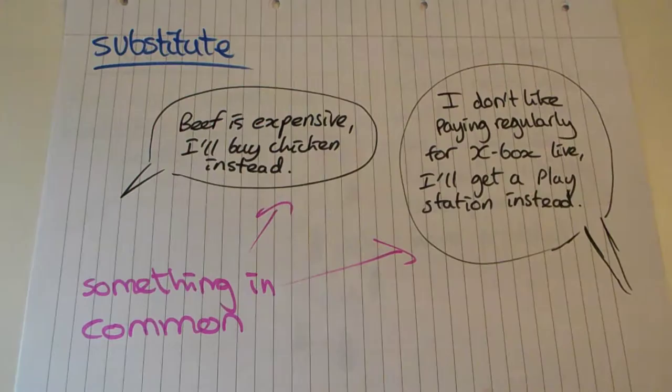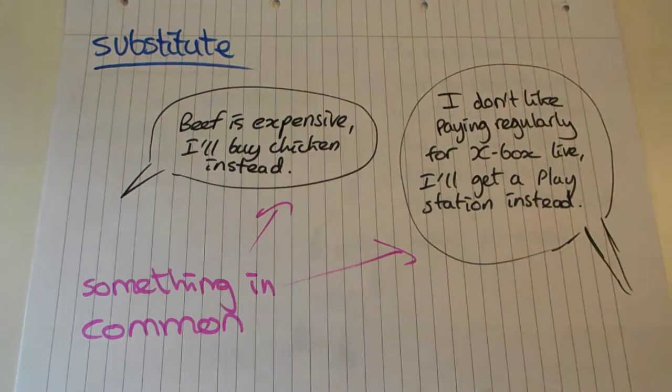Another example might be someone who doesn't really game that often but they still want to get a console. So instead of paying regularly for Xbox Live, even though they would have preferred an Xbox, they get a PlayStation instead because it would just be too expensive to have such regular payments for something they wouldn't use that often.